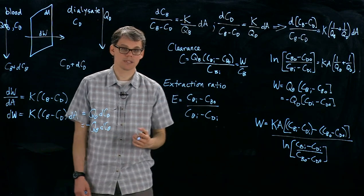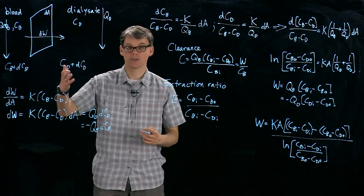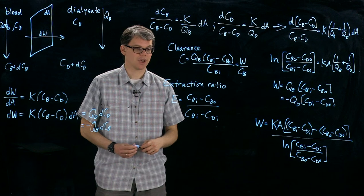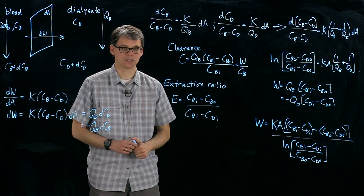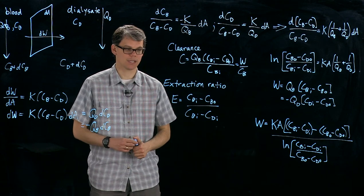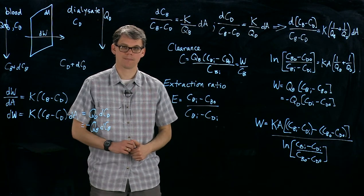So in workshop, as I said, we'll look at the case where we don't have a co-current dialyser and we'll find another equation for extraction ratio that you can actually use in lab to collect data and to get a number for this. Thanks.